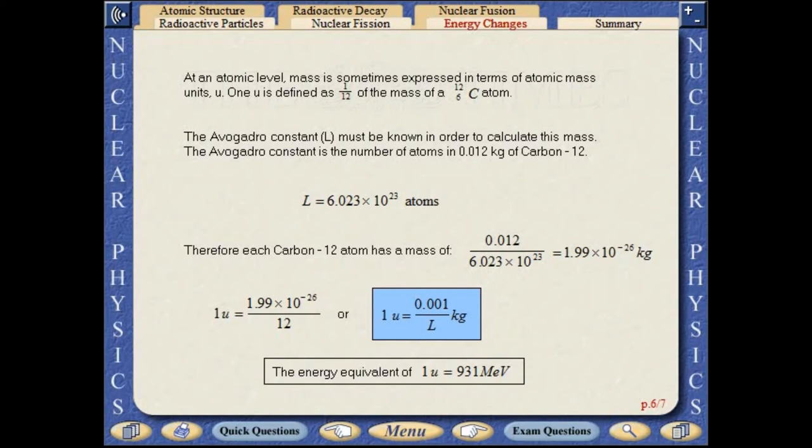The Avogadro constant must be known in order to calculate this mass. The Avogadro constant is the number of atoms in 12 grams of carbon-12. The energy equivalent of one atomic mass unit is 931 mega-electron volts.